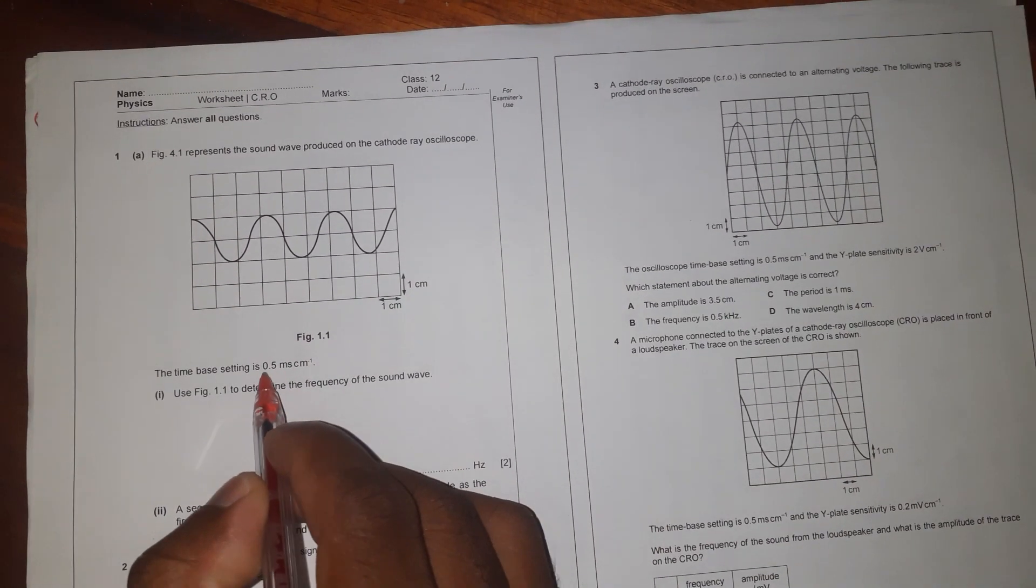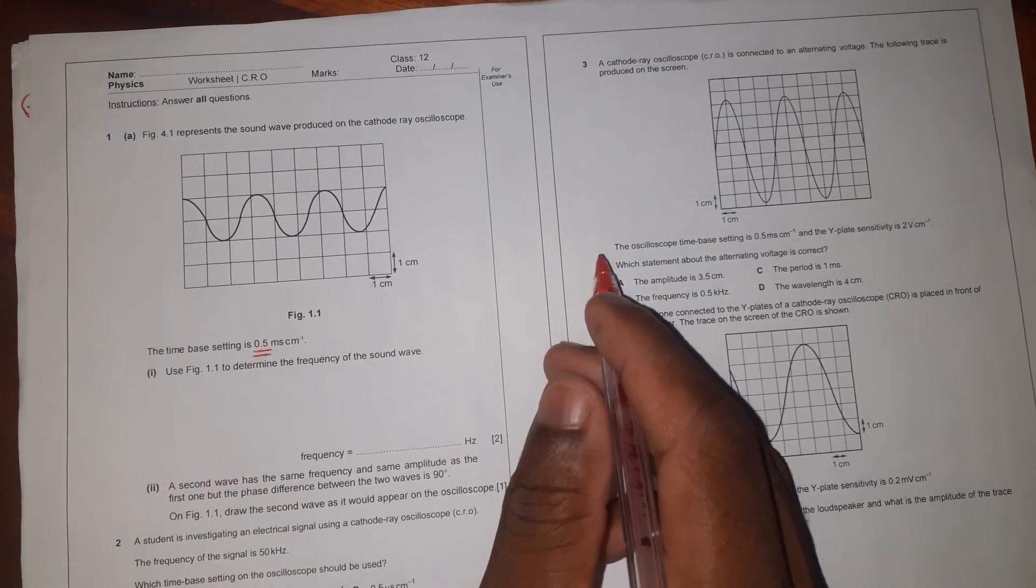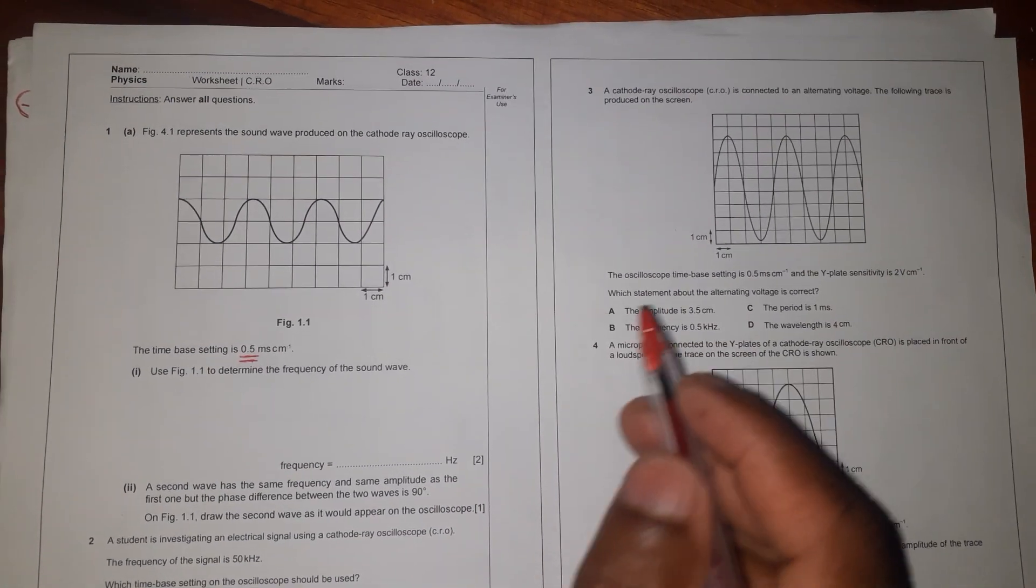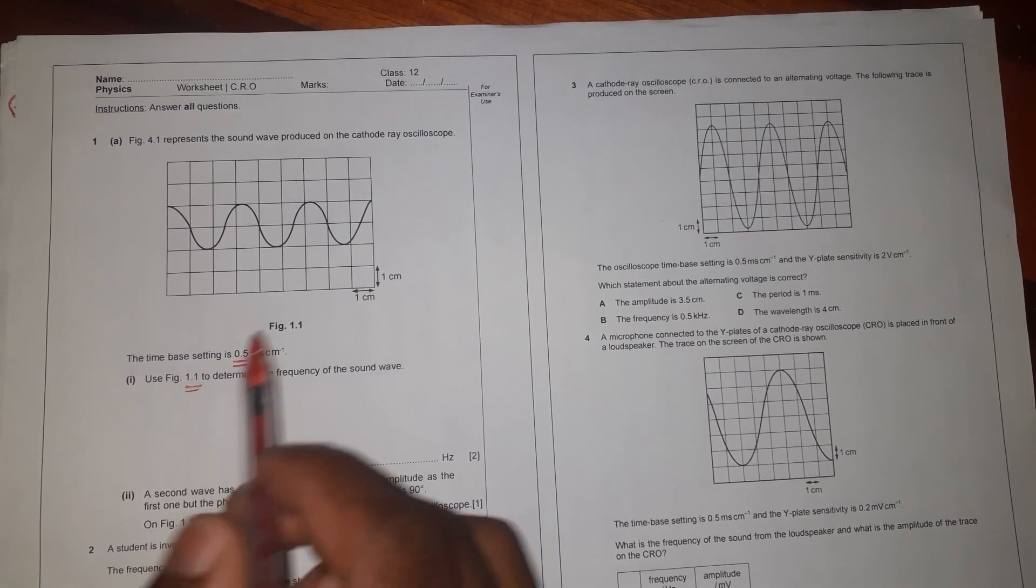We are told that the time base setting is 0.5 milliseconds per centimeter. Now we have to use figure 1.1, which is this diagram here, to determine frequency of the sound wave.